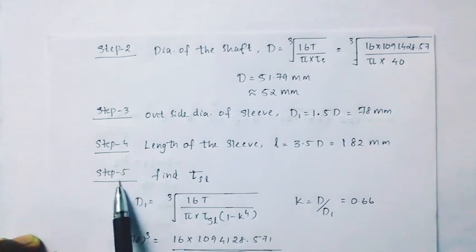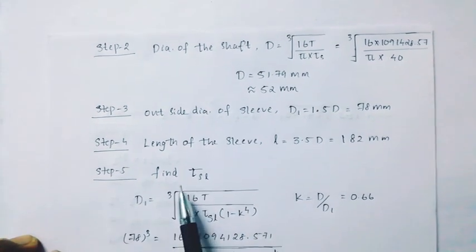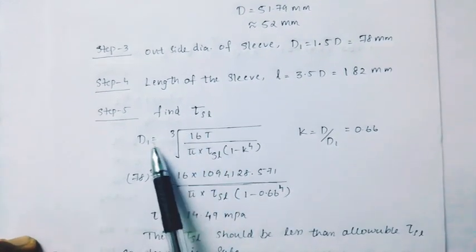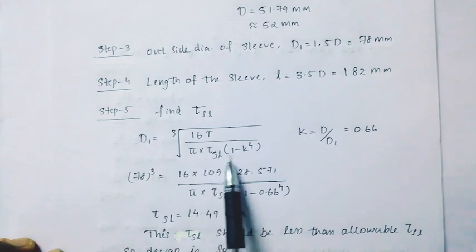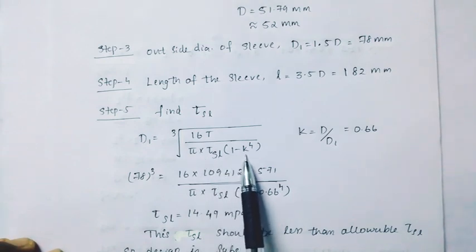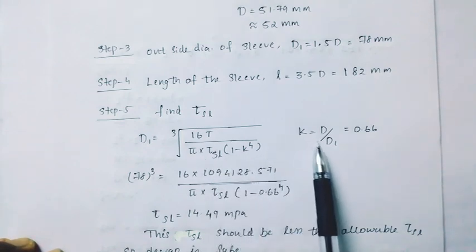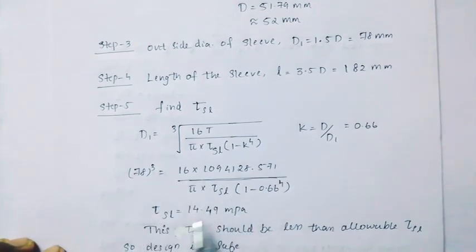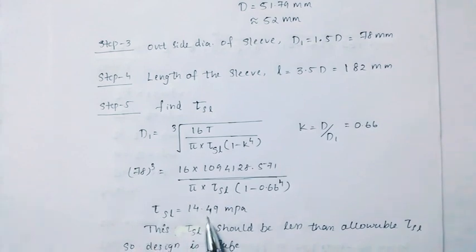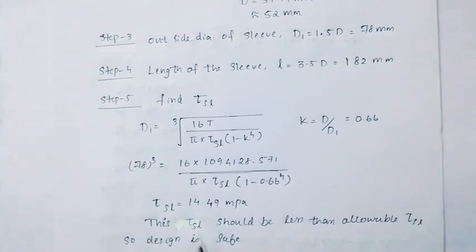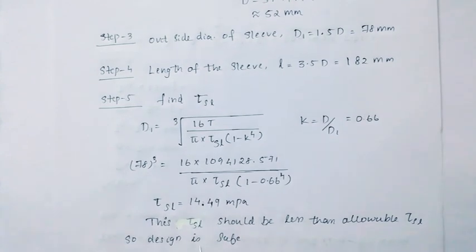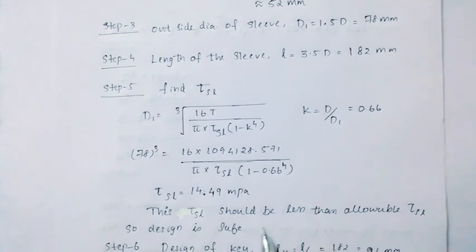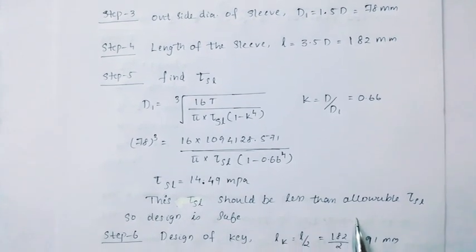Step 5: Find the shear stress of the muff. The equation is D1 = cube root of (16T divided by π × τ_sl × (1 − k⁴)), where k = D/D1 = 0.66. Substituting, τ_sl = 14.49MPa. This is less than the allowable τ_sl, so the design is safe.